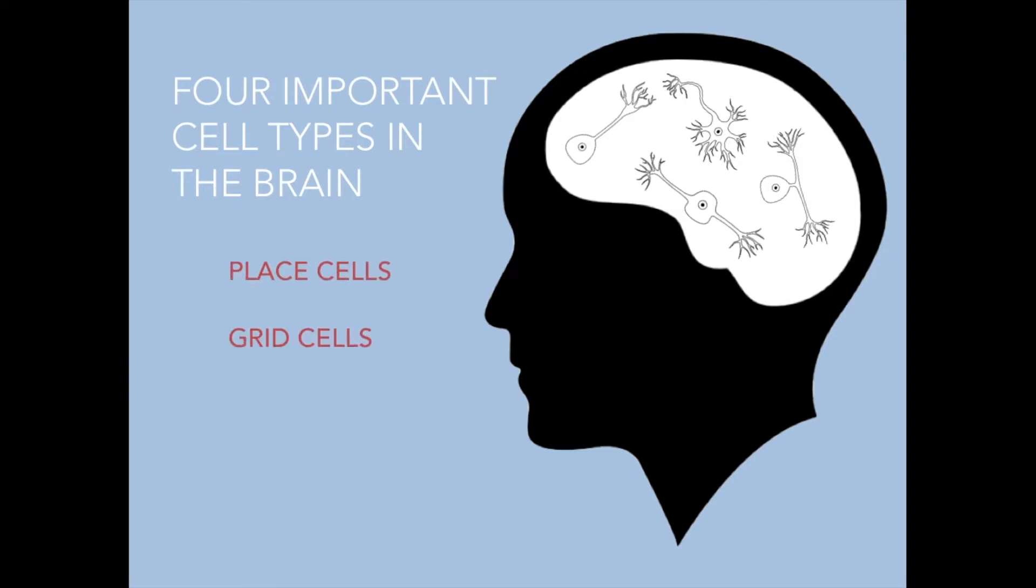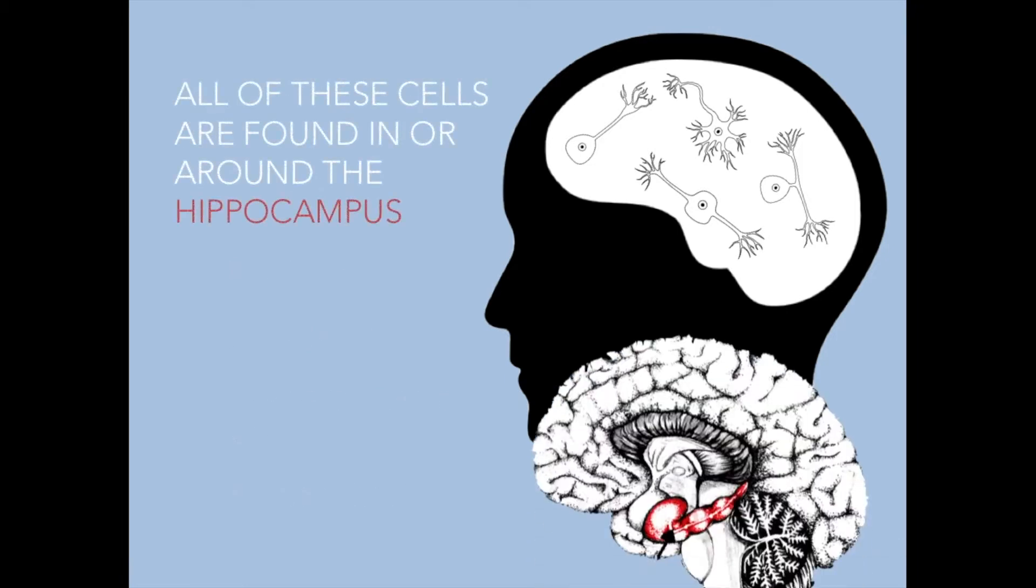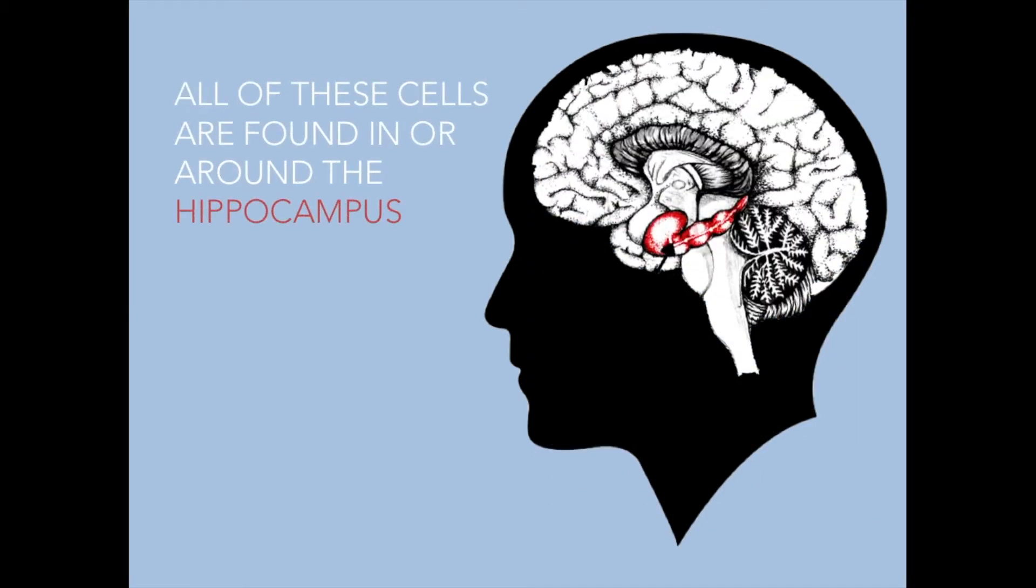Place cells, grid cells, head direction cells and border cells. All of these cells are found in or around the hippocampus, an important brain structure for memory.